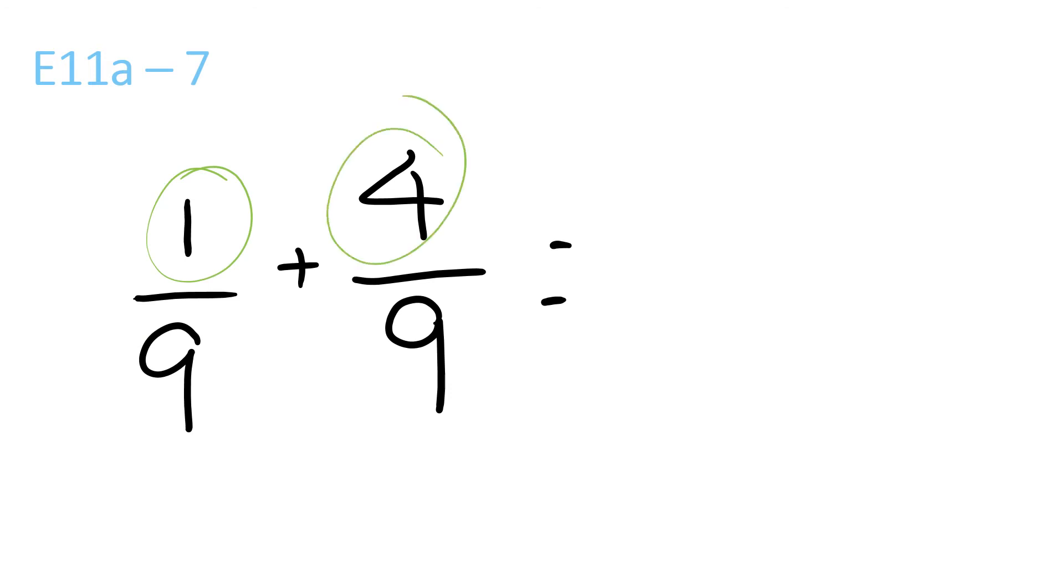1 plus 4, 5, because there's a plus here. So 1 plus 4 over 9, because 9 is here and here.